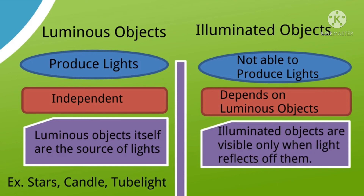Examples of luminous objects: stars, candles, tubelights. Examples of illuminated objects: book, table, and stones.